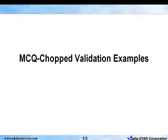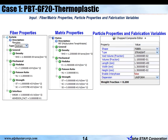A typical validation example for MCQ Chopped is shown next — for example, a PBT-GF20 thermoplastic. The typical inputs are fiber properties, vendor-provided matrix properties, and particle properties. For fiber properties we generally need density, modulus, Poisson's ratio, and strength; for matrix, we need similar properties. For particle properties, we need to know the shape and type of fiber — it could be straight or wavy to introduce manufacturing defects — as well as void volume fraction, volume fraction, length, and width. You can also specify dispersion as uniform or non-uniform, and introduce agglomeration if required. This is a typical input for MCQ Chopped software.